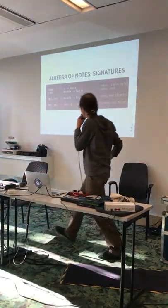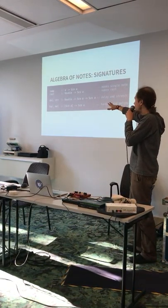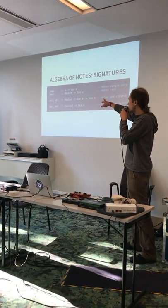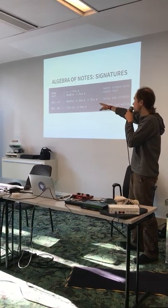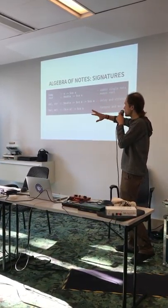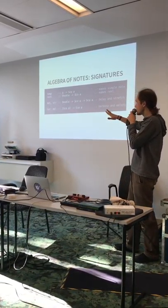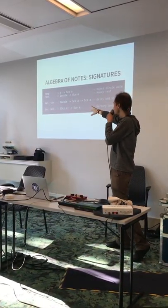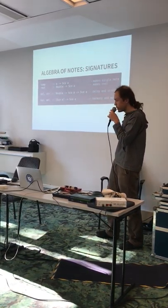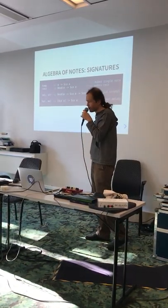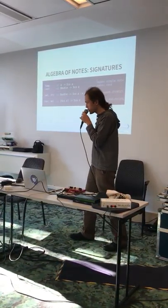The signatures look like this: Score is a score. Temp creates a single note. Rest creates no notes — just a pause. Delay and stretch just stretch and delay a group of notes. Harmony and melody group the notes. That's some algebra for the musician.